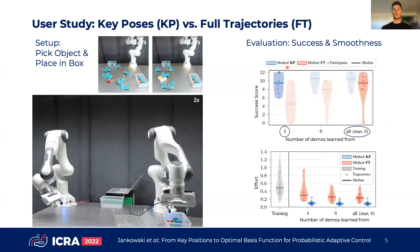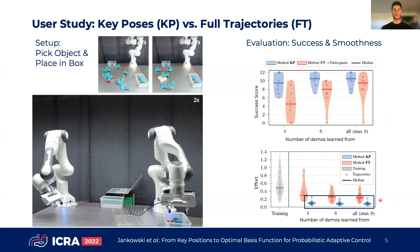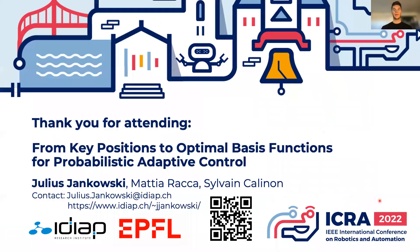On the right we show the quantitative results of our user study. The proposed approach is able to generate equal success rates with only half the number of demonstrations, indicating a drastic improvement in terms of sample efficiency. Moreover, compared to the full trajectory approach, learning from key poses only produces much smoother trajectories on the fly, which is reflected in the effort metric. This is due to the use of our optimal basis functions. Thank you for attending our talk, and in case of questions, don't hesitate to contact me through the provided links.